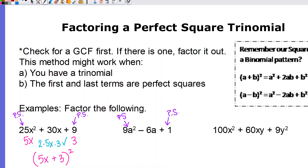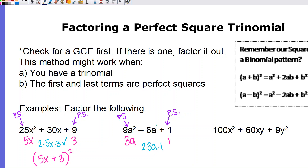1 is also a perfect square. I'll check if it matches the pattern: the square root of 9a² is 3a, so the first part of the parentheses is 3a. The square root of 1 is 1. Now I check: is 2 times 3a times 1 equal to 6a? Yes, 2 times 3a is 6a times 1 — it is! So this is a perfect square trinomial. The answer is (3a − 1)², because the middle term was negative.